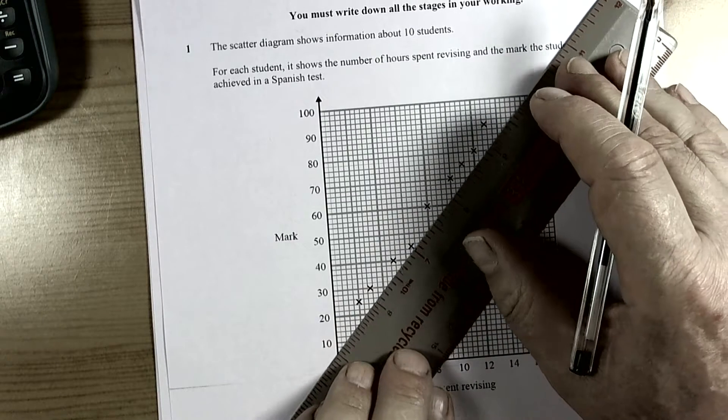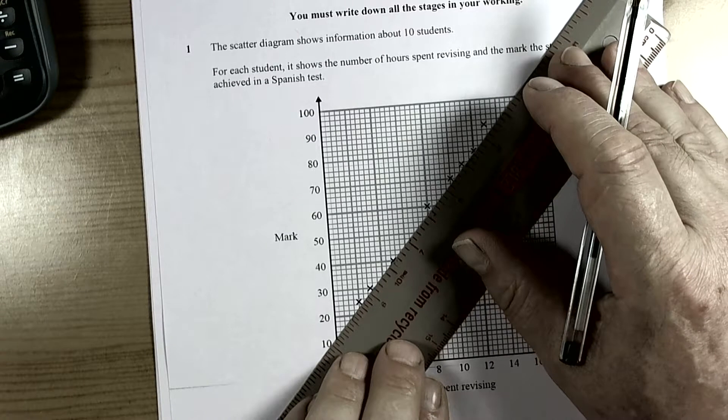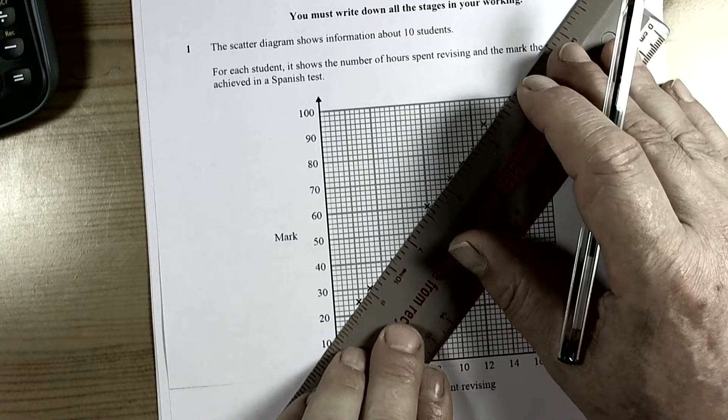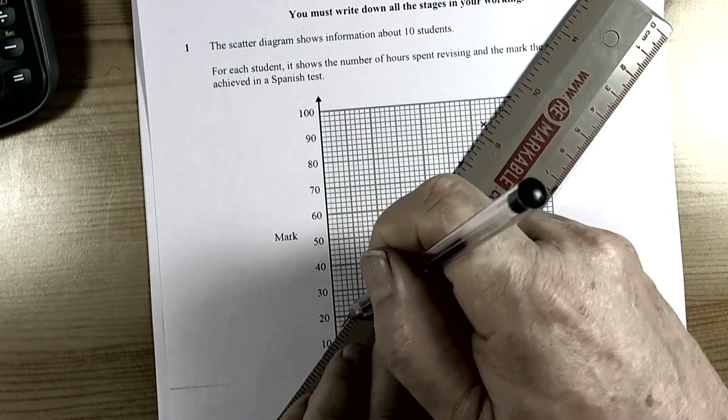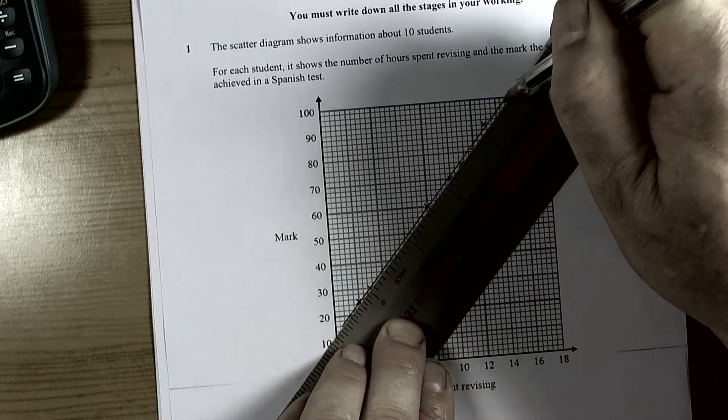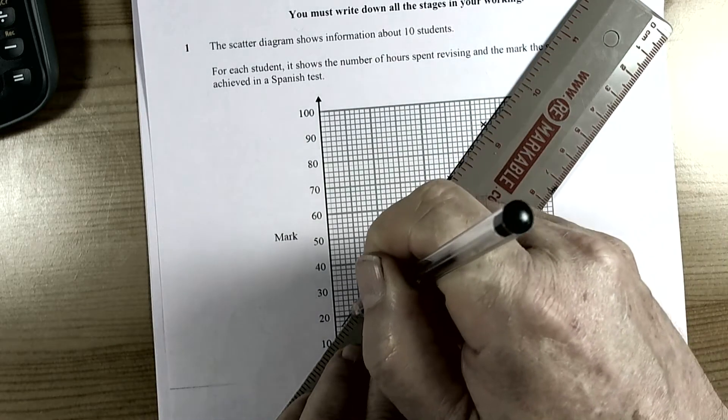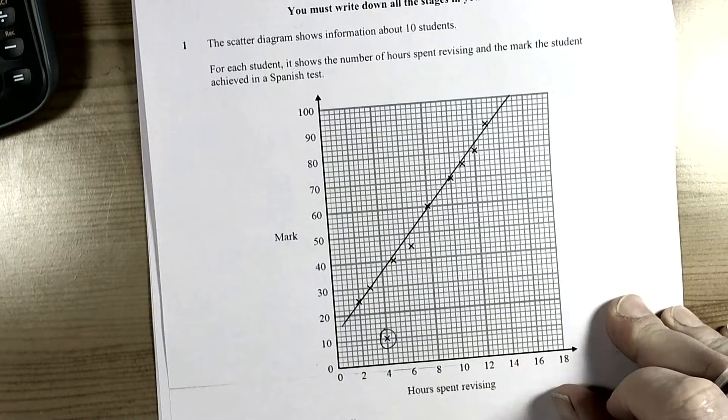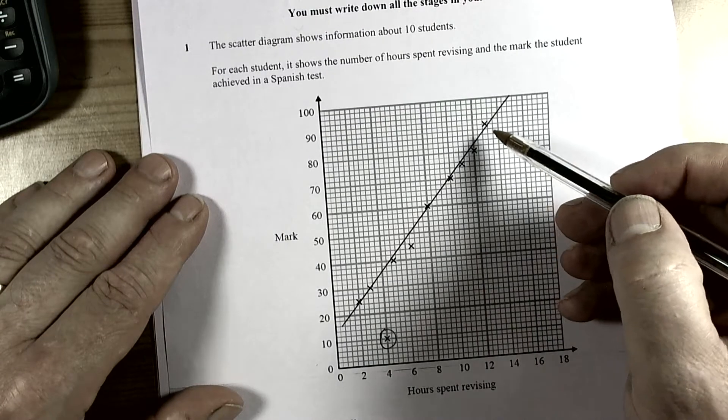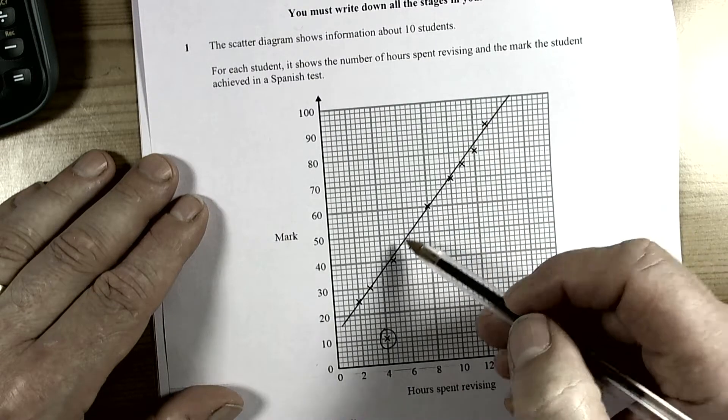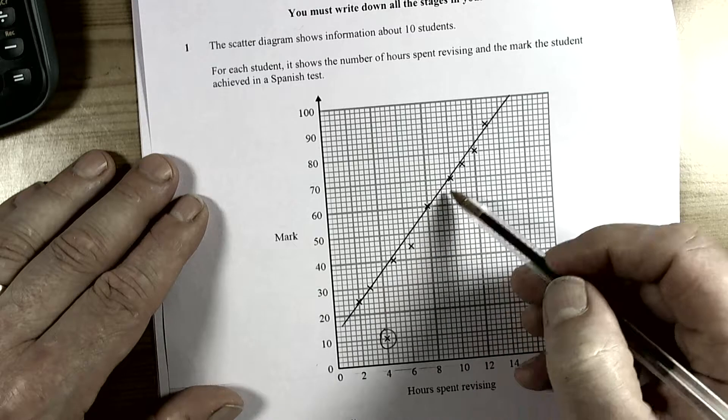but it's supposed to be such that the distance from the crosses above the line and the distance from the crosses below the line balance each other out. So you're roughly after something like that where if you look at the distance above and then below they're roughly the same.